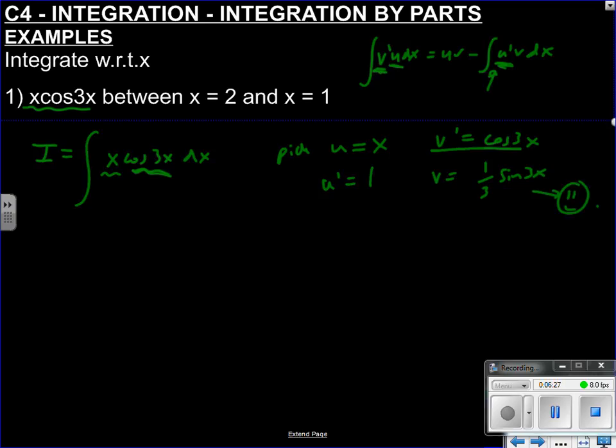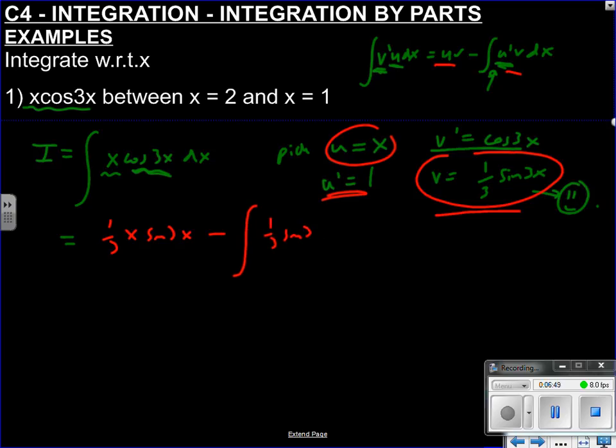So now I can literally just fill in my ingredients. So u v, the first part of the formula, u v, so a third x sine 3x. Minus, now u dash v, as per the formula. So integral, u dash is 1, a third sine 3x. Do you see how it's broken it down into something that we can deal with? We know how to integrate a third sine 3x, easy. So third x sine 3x minus 1 over 9 cos 3x plus c, quickly differentiate that to check.